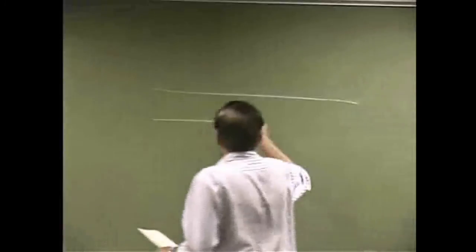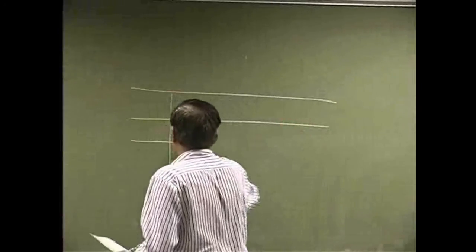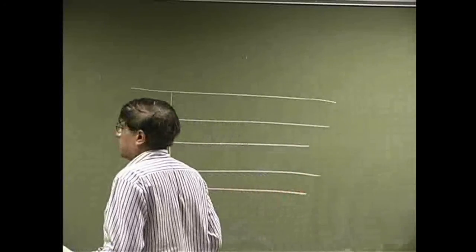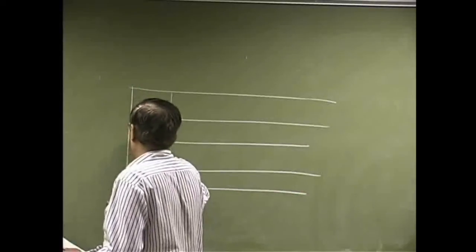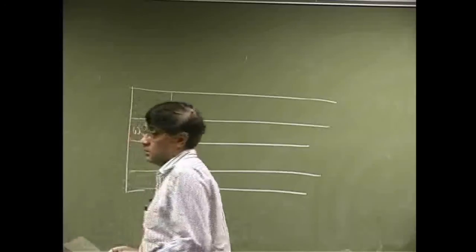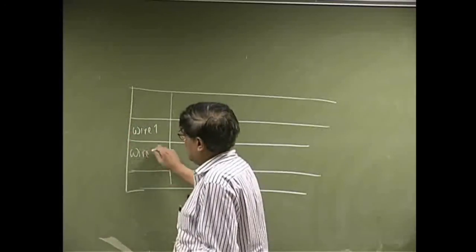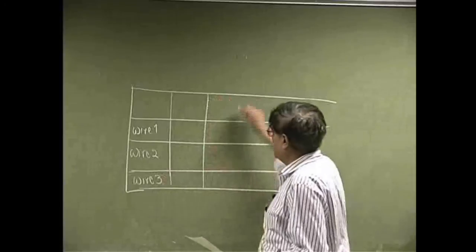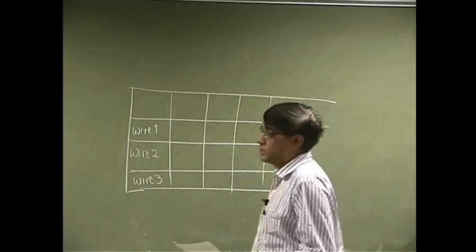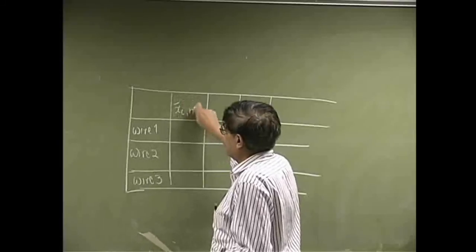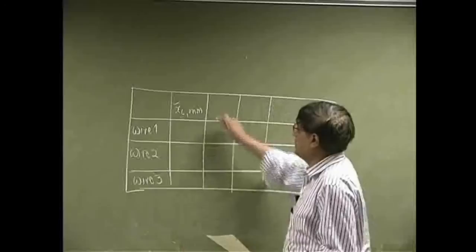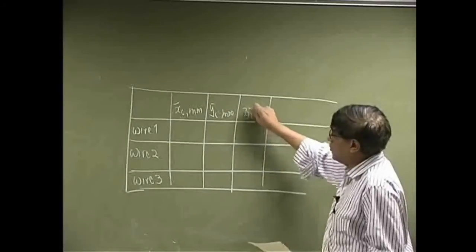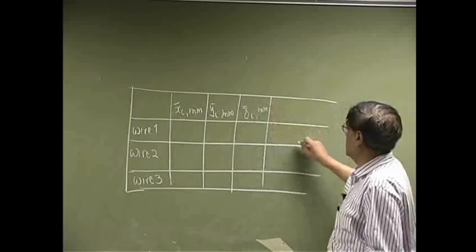Let me make a table for this. We are going to take wire 1, then wire 2, and then wire 3. Then we are going to have three sets of coordinates for centroids. So we'll have x-i-bar in millimeters, y-bar in millimeters, and a third coordinate z-bar also in millimeters.